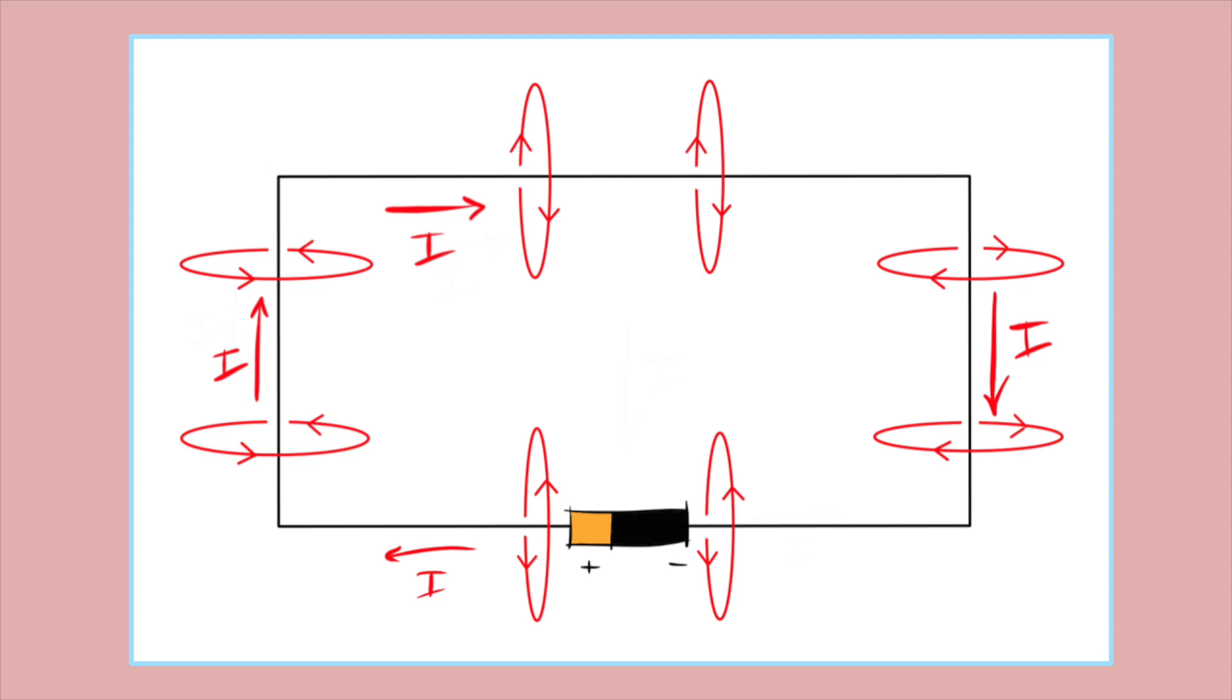Now fields are always vectors so this leaves us with two important questions. First, how strong is the electromagnetic field? And second, in what direction does the electromagnetic field point?